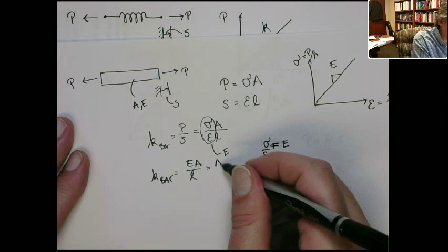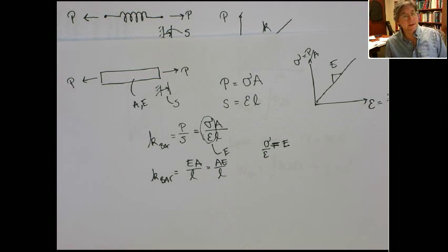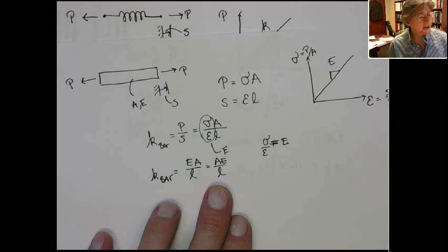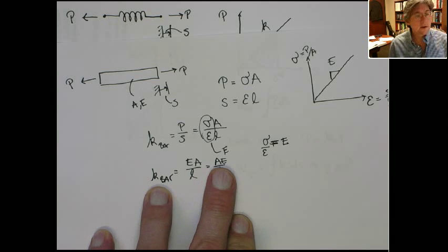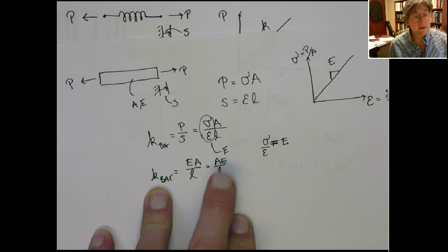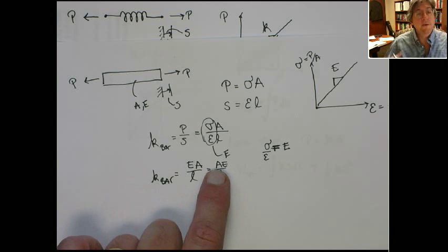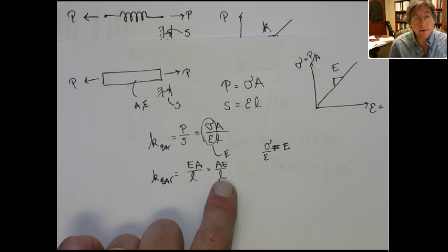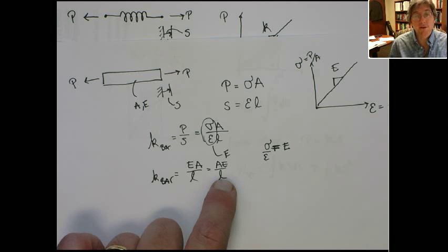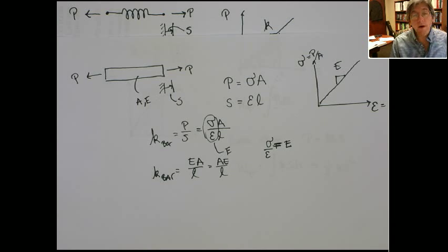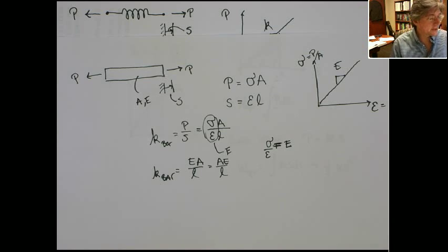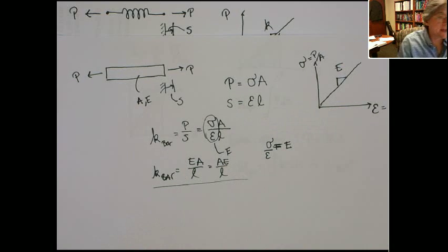We know that stress over strain is equal to the modulus, so this can be replaced by the modulus. Now we've got something just in terms of properties of the bar. The spring stiffness of the bar is E times A over L. That bar material can act like a spring — here's the stiffness. As the modulus goes up, spring stiffness goes up. If it has a bigger cross-sectional area, spring constant goes up. And if it's longer, the spring constant goes down — a long bar is more compliant than a shorter bar.